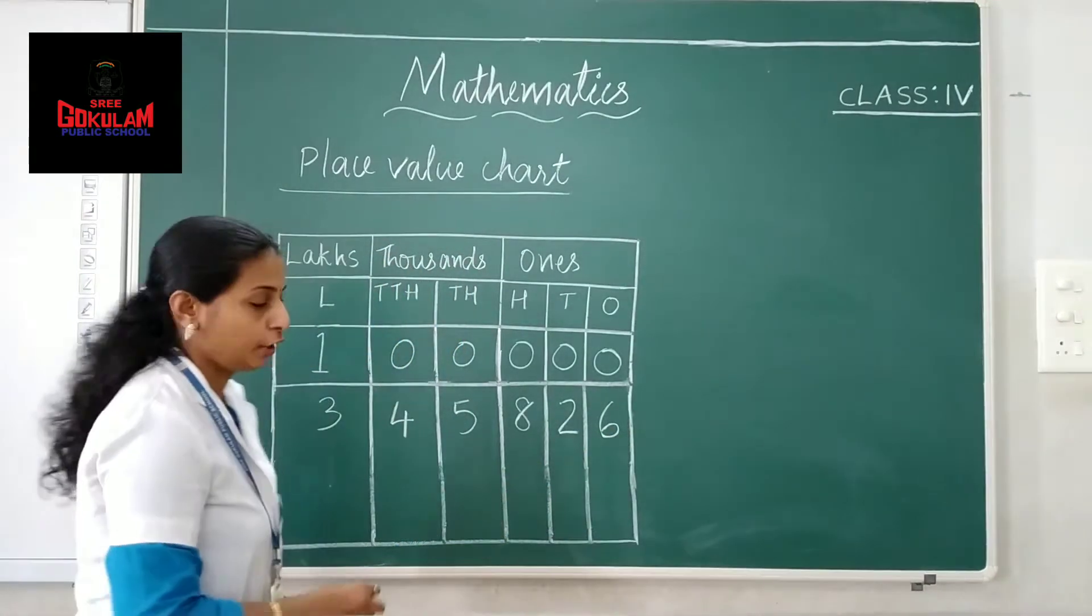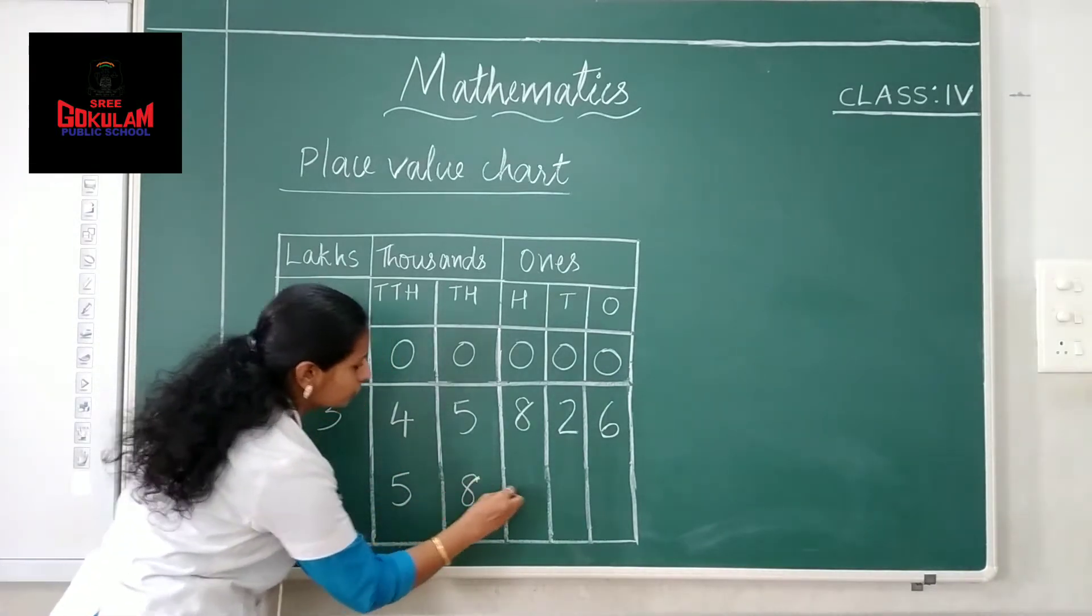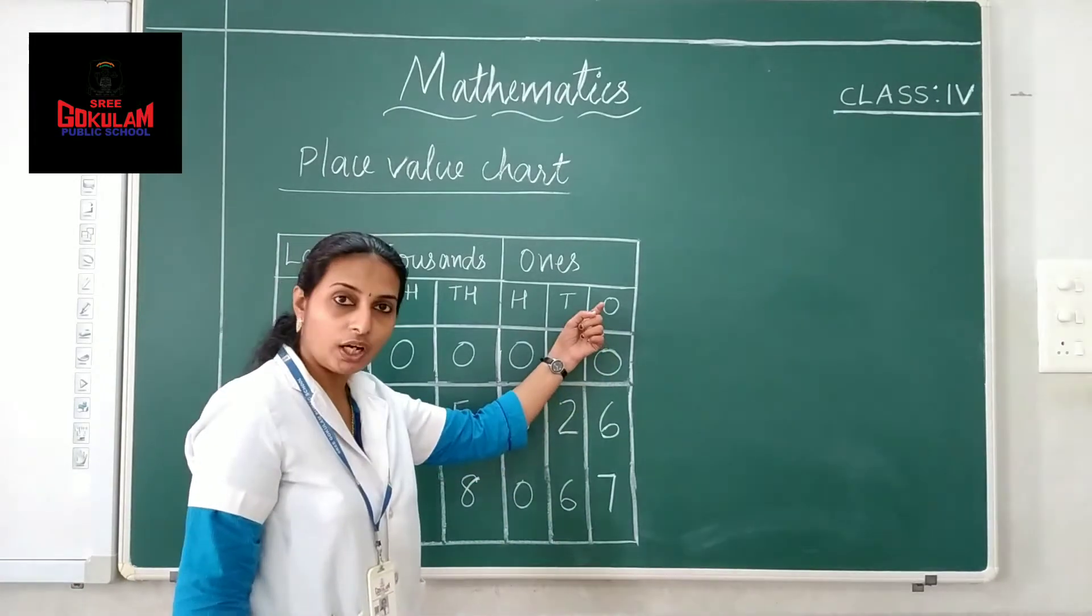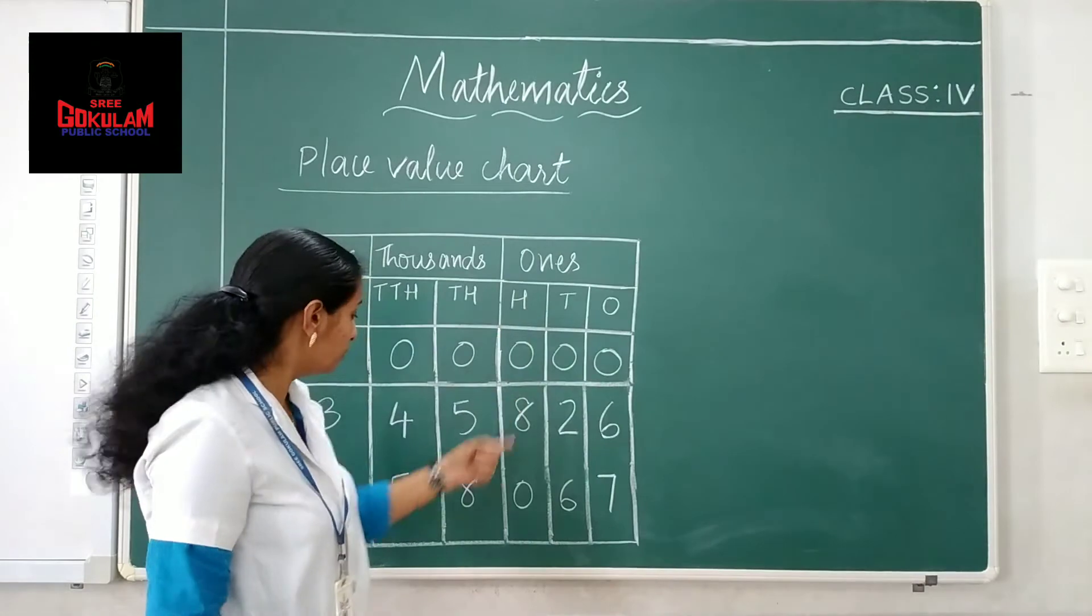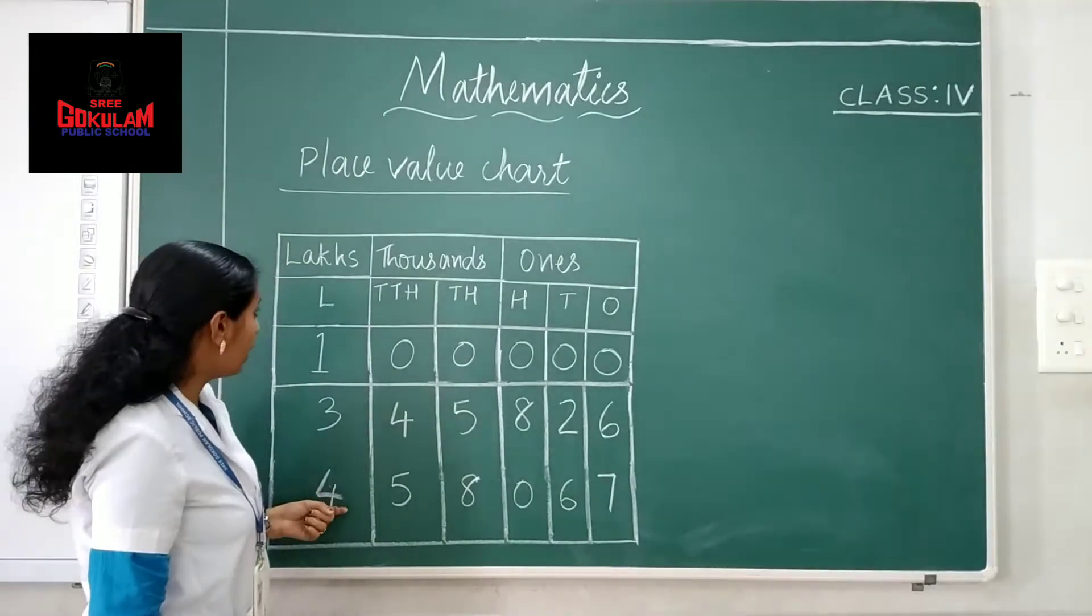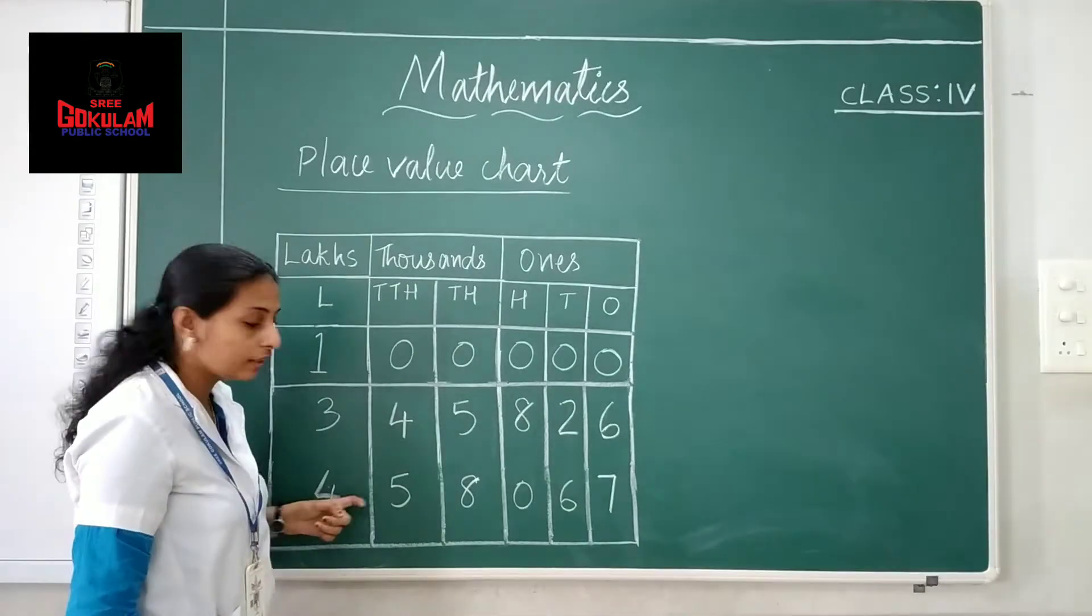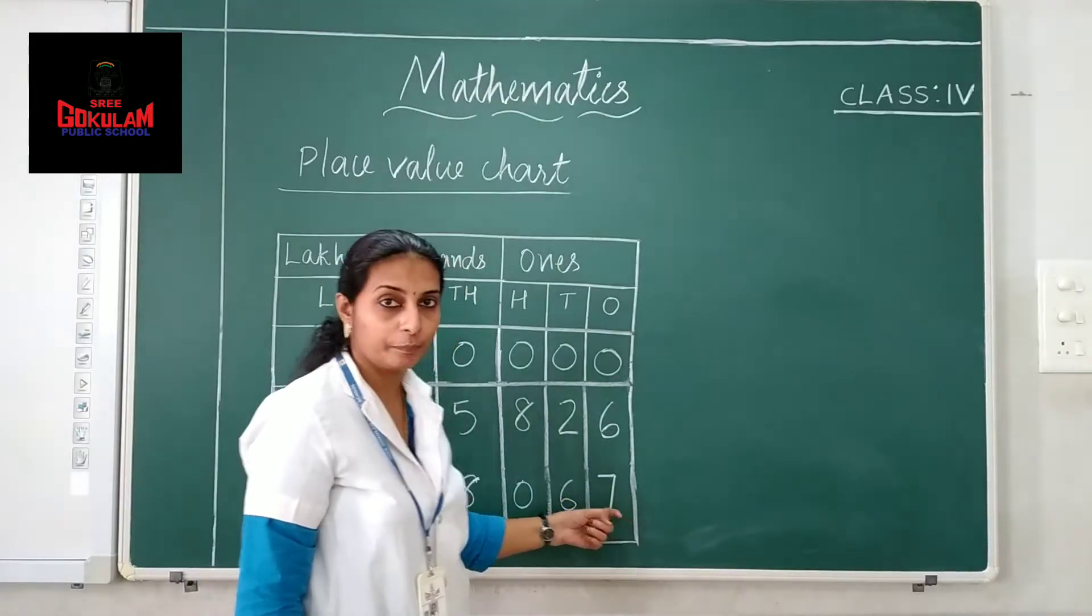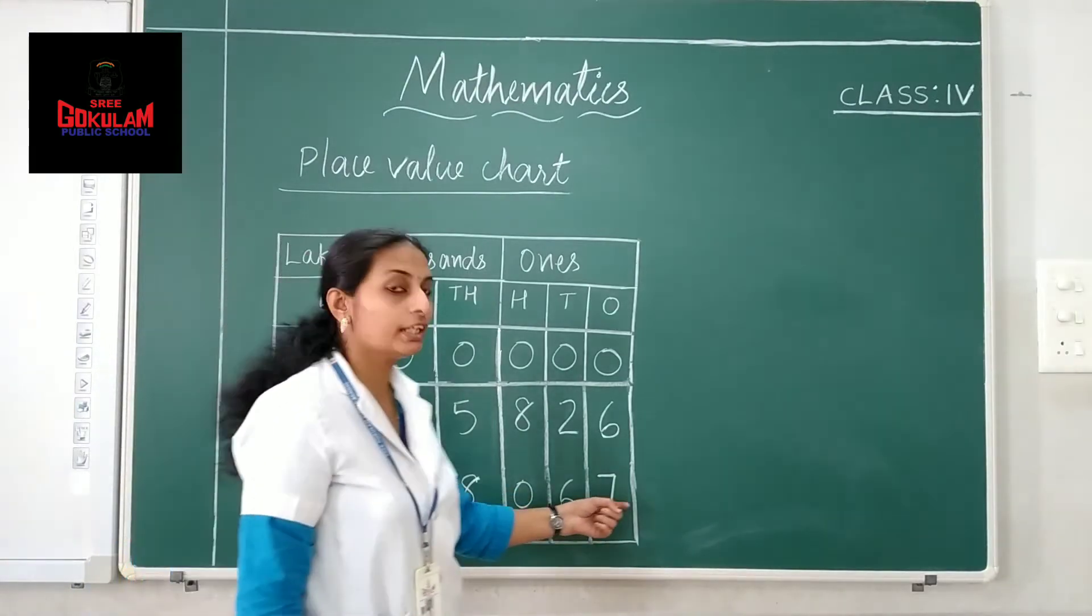Next example. Here, 7 ones, 6 tens, 0 hundreds, 8 thousand, 5 ten thousand and 4 lakh. This we can read the number as 4 lakh 58,067.